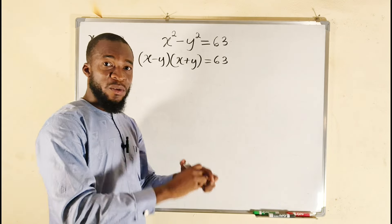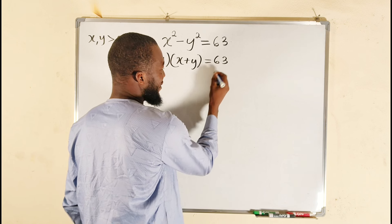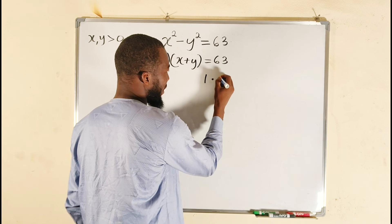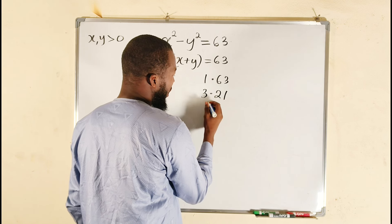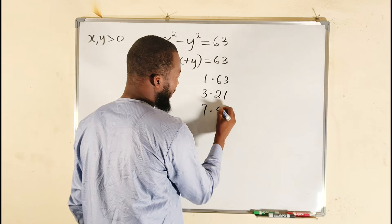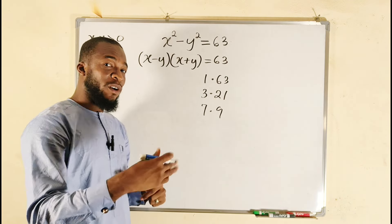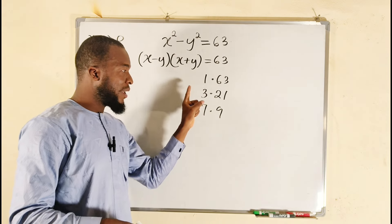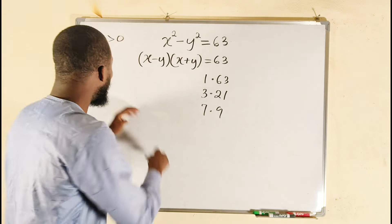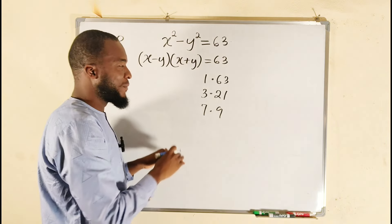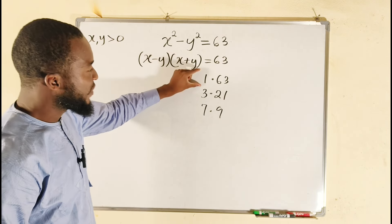Can we express 63 as pairs of factors? Yes, because 63 can be written as 1 multiplied by 63, 3 multiplied by 21, and finally 7 multiplied by 9 — all of these multiply to give 63. Remember we also have other pairs like negative 1 and negative 63, negative 3 and negative 21, negative 7 and negative 9, but I have chosen x and y to be positive, otherwise we would have to spend a lot of time solving this problem.